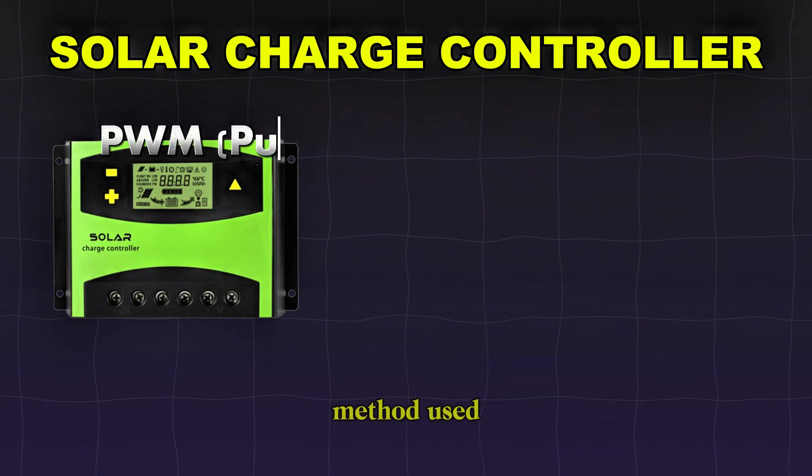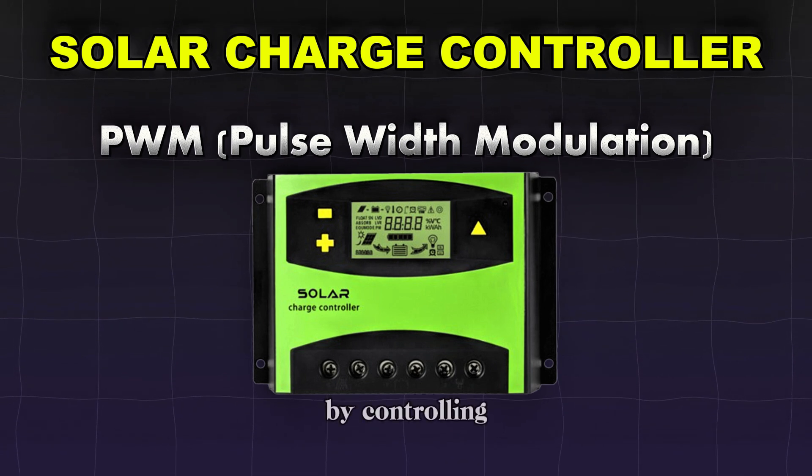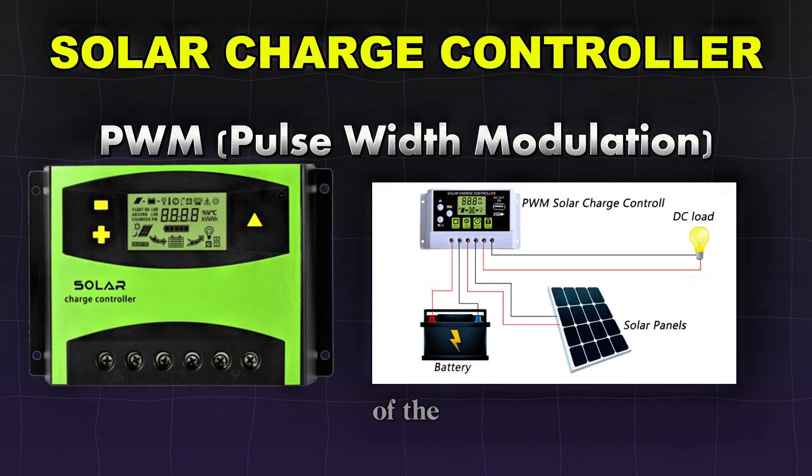PWM is a method used by some solar charge controllers to regulate the charging current of a battery by controlling the duration of the on and off periods of the charging pulse.